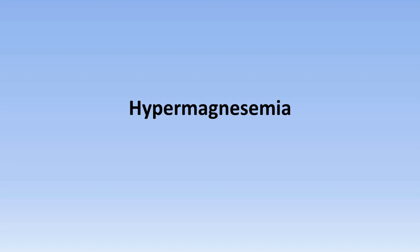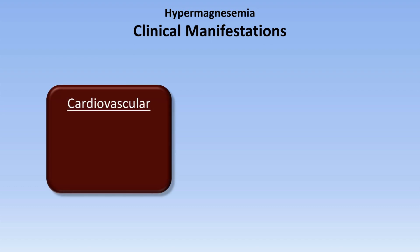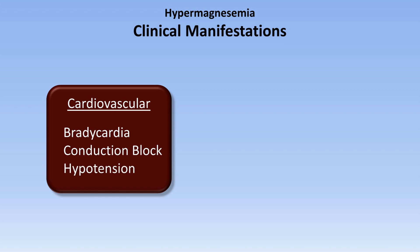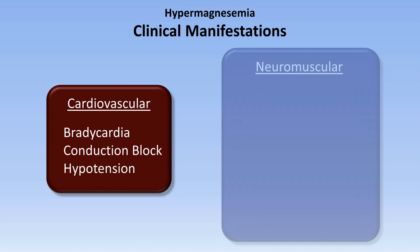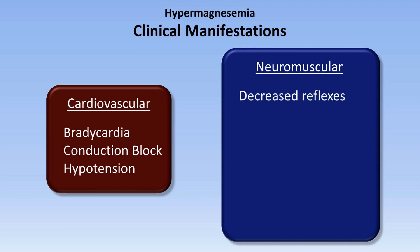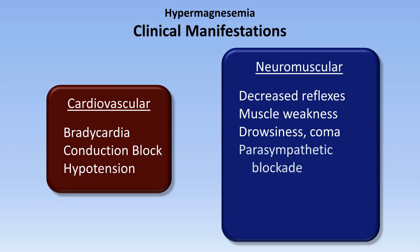Let me now move on to hypermagnesemia. Because hypermagnesemia is often more abrupt and iatrogenic, it's easier to demonstrate that some findings are truly due to hypermagnesemia and not from other concurrent electrolyte disorders as with hypomagnesemia. These clinical manifestations fall into two main categories. Cardiovascular manifestations include bradycardia and conduction block, which can progress to complete heart block and even asystole, along with hypotension. The other category is neuromuscular findings, which include decreased reflexes, muscle weakness, and drowsiness progressing to coma.